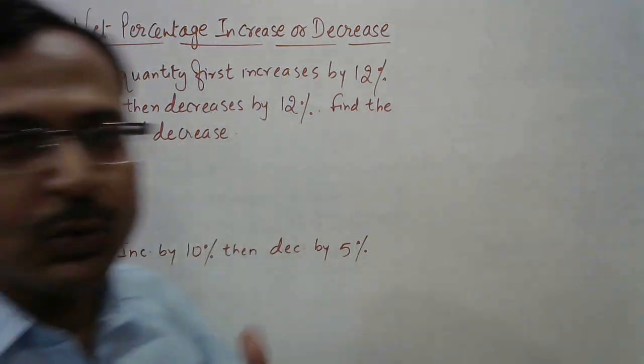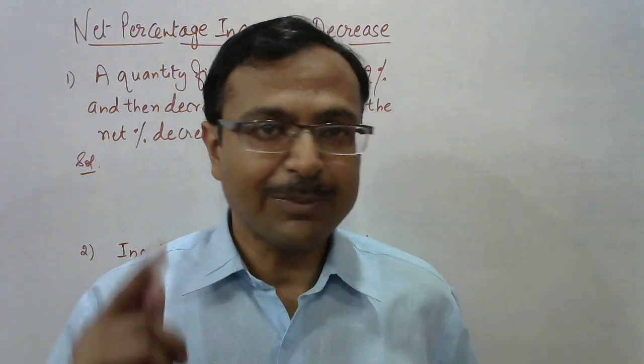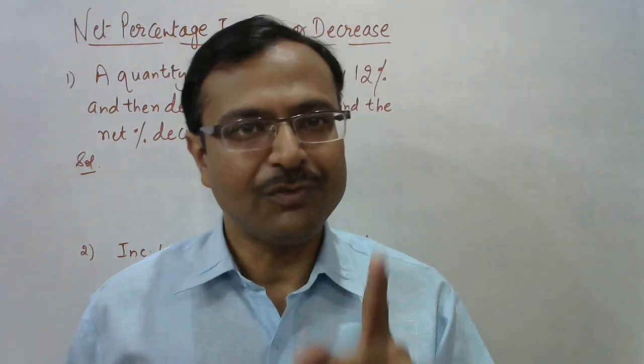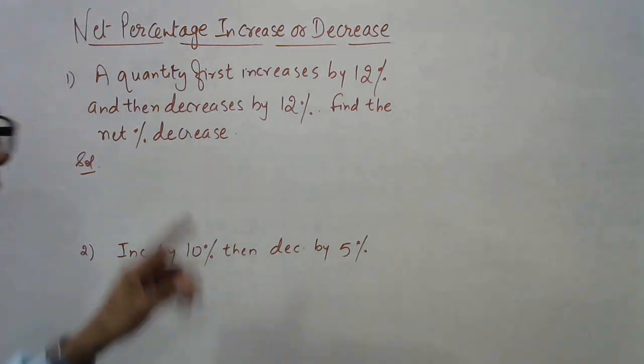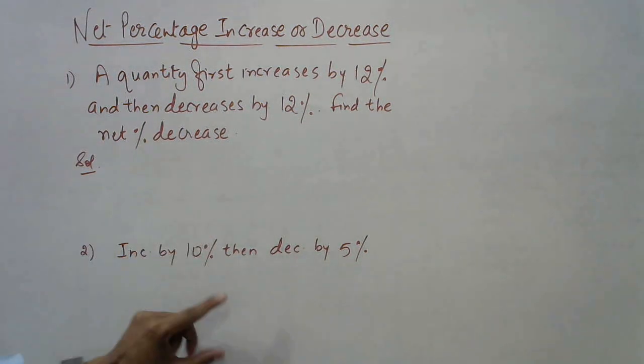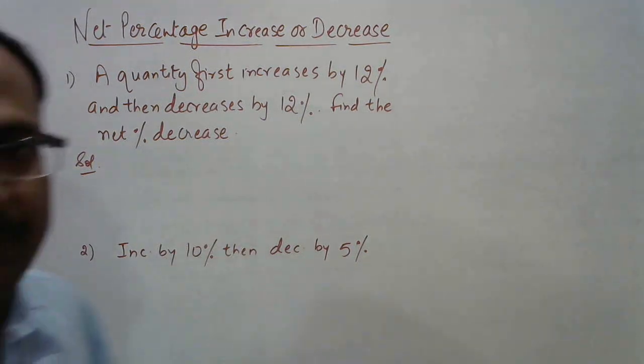If you assume the quantity is x and work it out conventionally, it consumes quite a lot of time. But through the short trick I'm going to show you, this takes only five to six seconds — you can even do it without pen and paper. Likewise, if the increase and decrease percentages are different, there's a separate short trick that also gives the answer within five to six seconds.